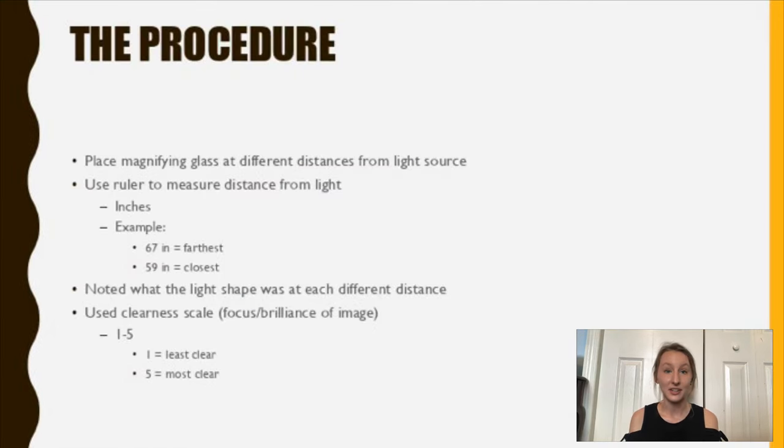So my procedure was to place a magnifying glass at different distances from the light source, and I would use a ruler to measure the distance from the light, and I did this in inches. For example, I would do 67 inches for my farthest distance and 59 inches for the closest, and I noted what the light shape was at each different distance.